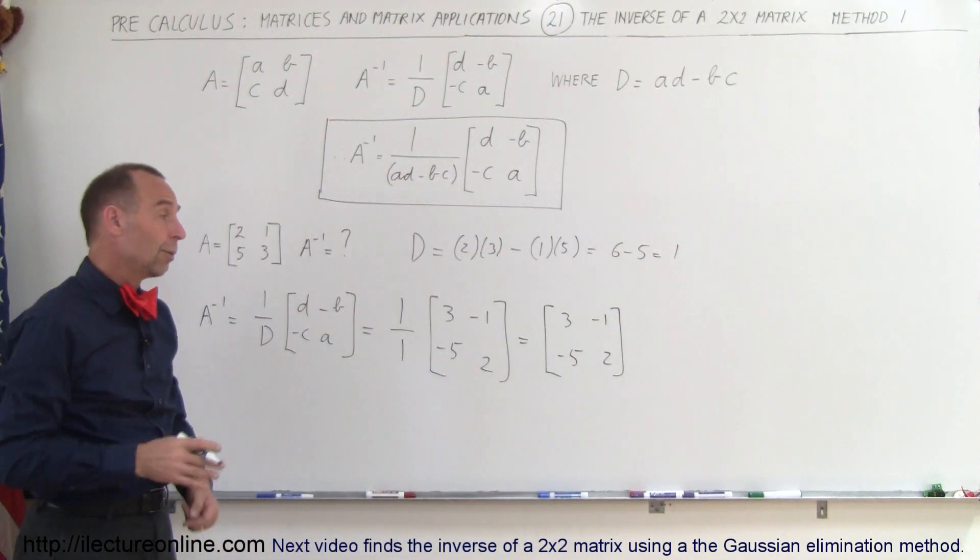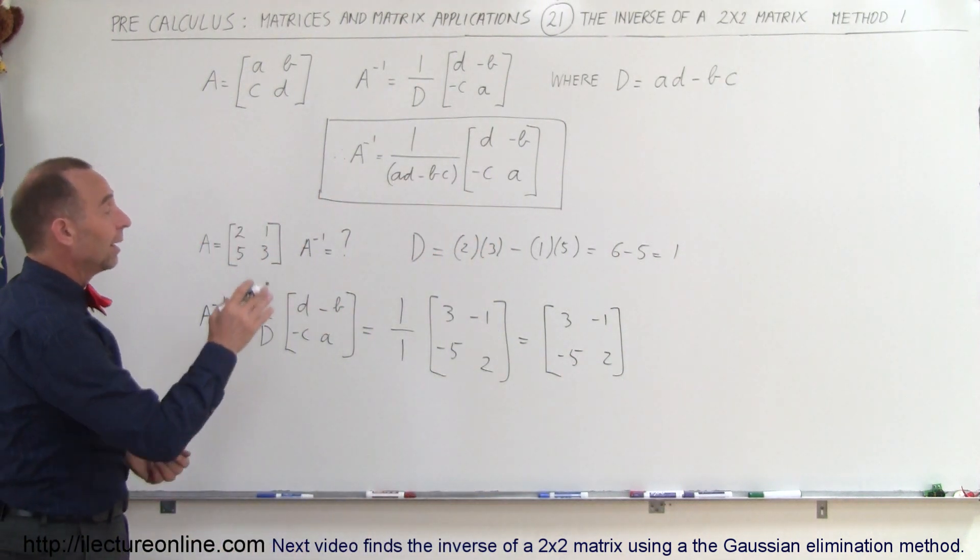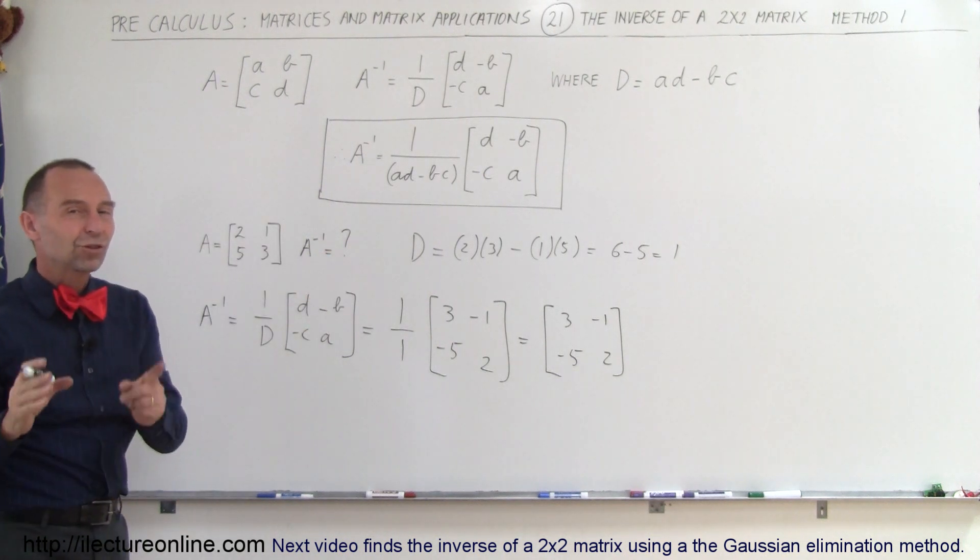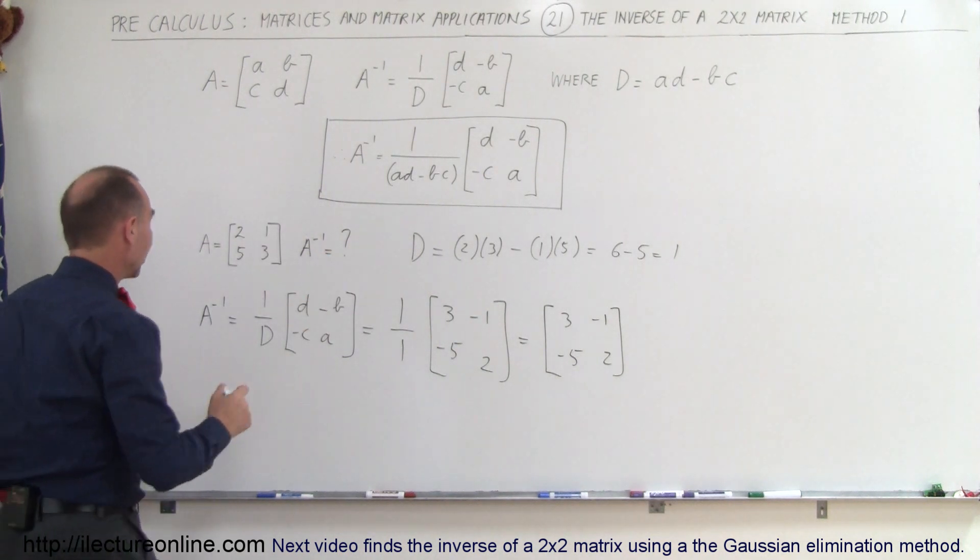Now, just to make sure we did it correctly, what we could do is we could multiply the matrix times the inverse of the matrix, and we should get back the identity matrix. So let's try that.